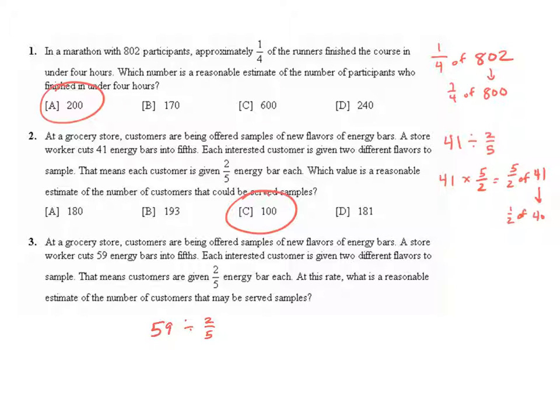I'm going to think of this as a multiplication problem. So 59 times the reciprocal of two-fifths, which is five-halves, and I can always commute that by saying five-halves of 59. I want something close to 59 that I can find a half of, so I'm going to think of this as one-half of 60.